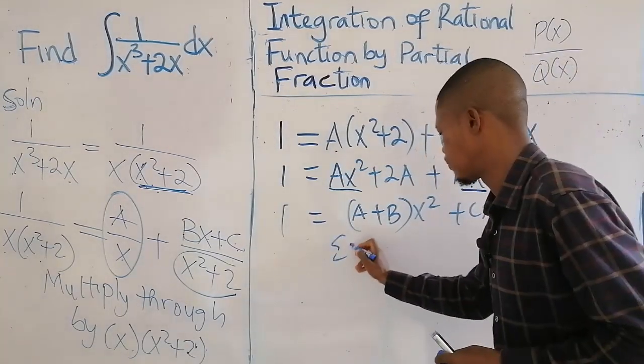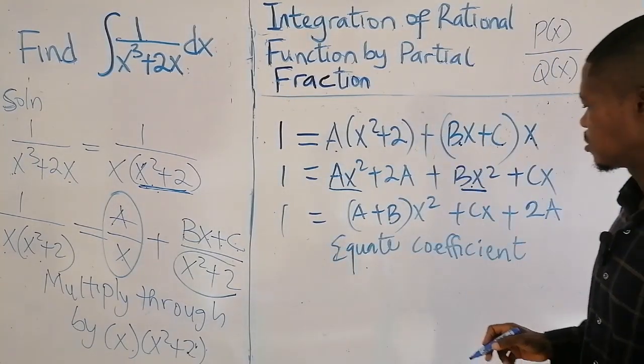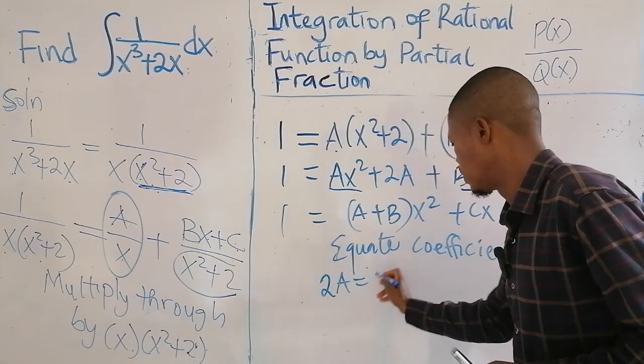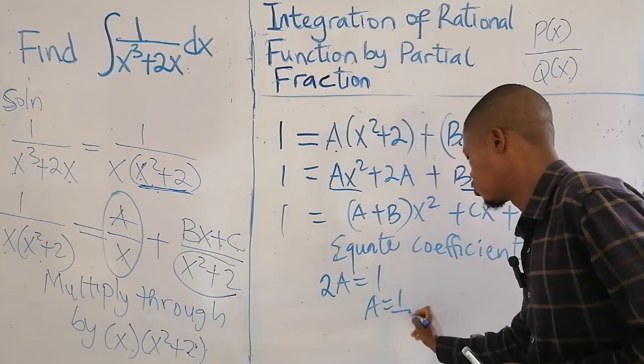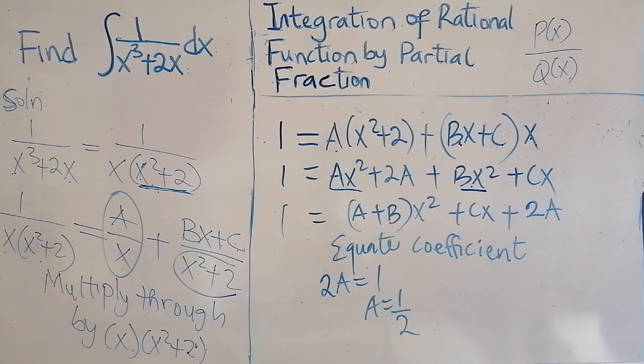So equate coefficients. Equate the constant terms. So 2A is equal to 1. So A is 1 by 2.